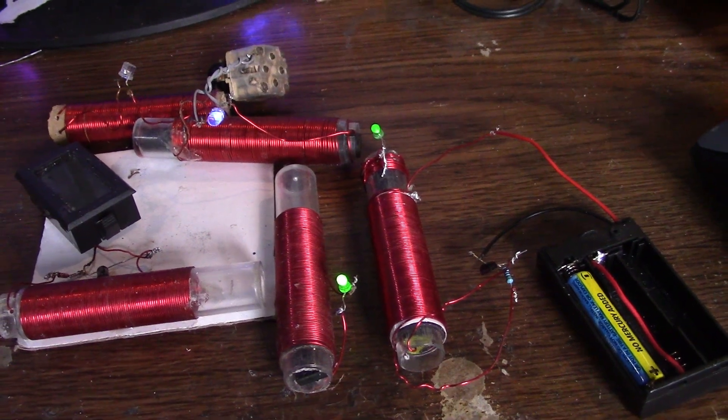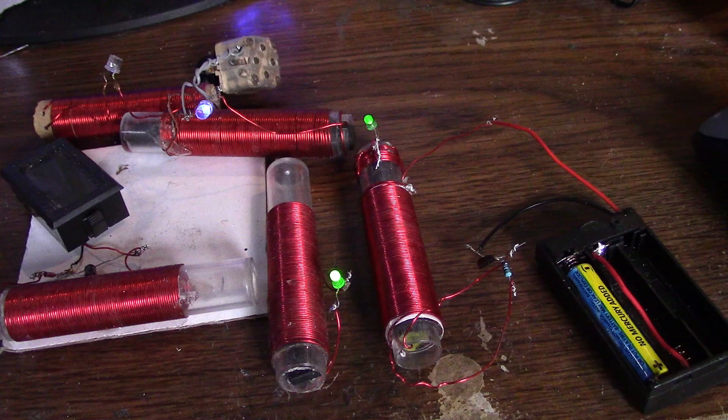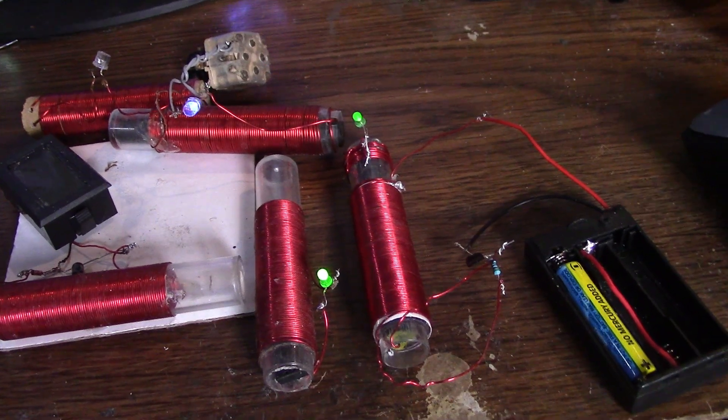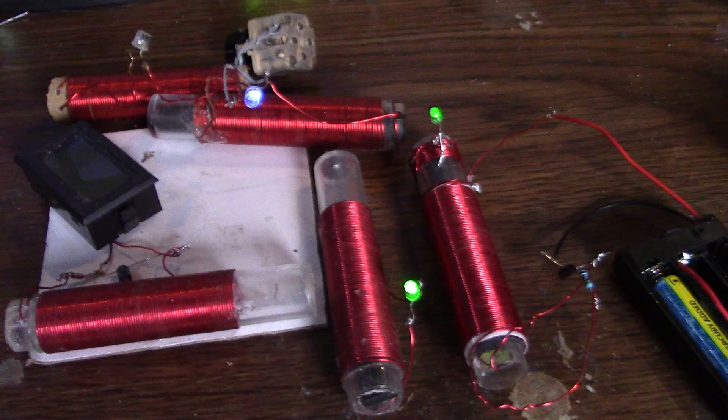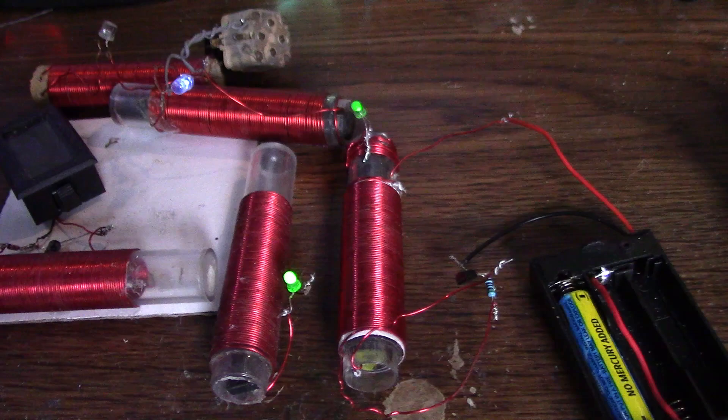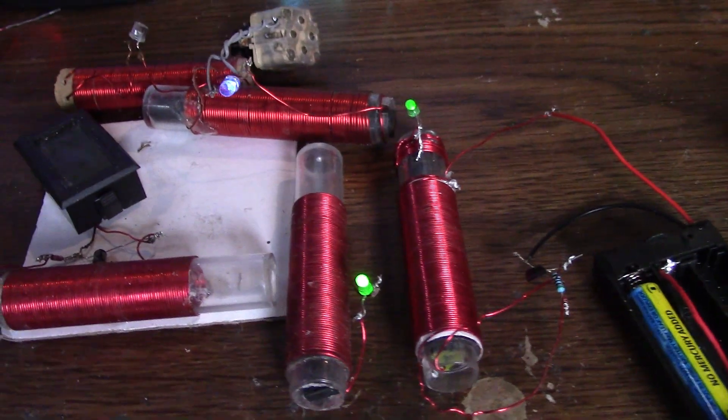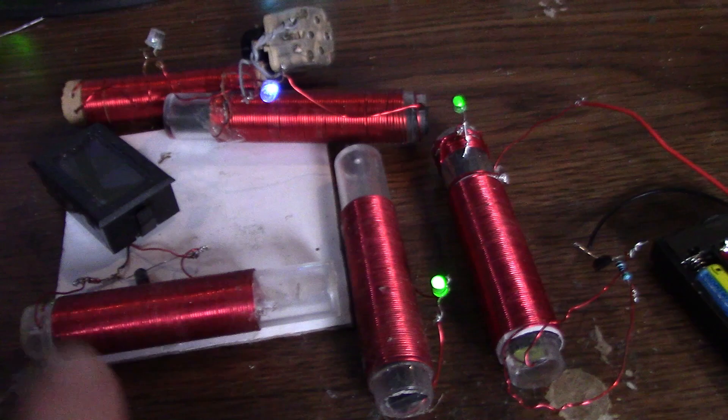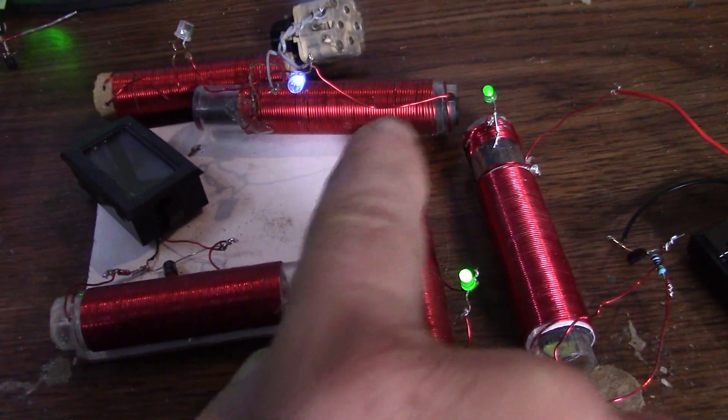Welcome back to the channel. Recently I showed a dual ringer type circuit, 1.5 volt powered, and was wondering about expanding it and seeing which directions I could go with this particular setup. I've got several of these other coils that are receiving energy from this main one here.